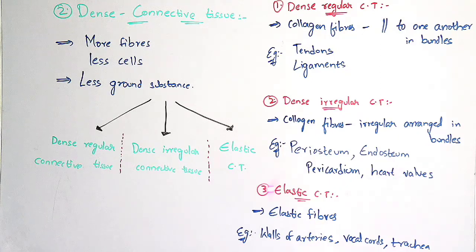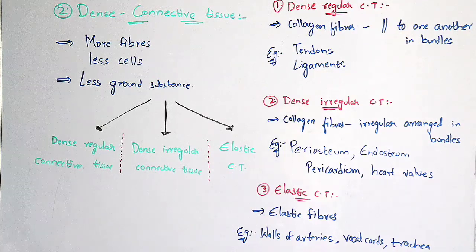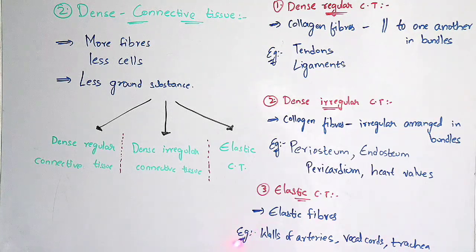Coming to the third type — elastic connective tissue. This tissue consists of elastic fibers, also known as yellow fibers because of their yellow color. These yellow fibers are elastic in nature, so they can expand — that is, they allow considerable extension. The best examples are the walls of arteries in the heart, vocal cords, trachea, bronchi, and elastic ligaments between the vertebral column.